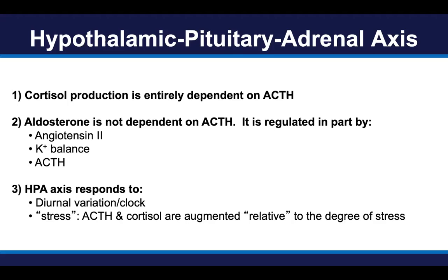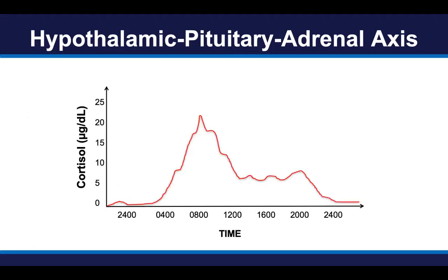It's also important to note that this hypothalamic pituitary adrenal axis responds to diurnal variation — the circadian rhythm or the clock of our bodies — which is typically timed to sunrise and sunset, or light and darkness. But it also responds to stress, typically physical stress but also emotional and mental stress. In response to stress, ACTH and cortisol production are augmented relative to the degree of that stress. Here's a cartoon of a classical circadian rhythm: cortisol production is very low overnight and rises in the morning, typically with sunrise or exposure to light, peaks in the early morning, and then dwindles down throughout the day, only to reach a nadir again with sunset, darkness, or sleep.